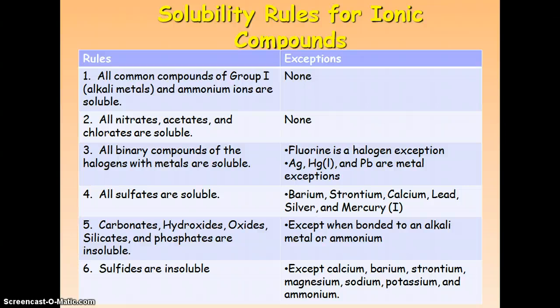Carbonates, hydroxides, oxides, silicates, and phosphates are insoluble, except when they're bonded to an alkali metal or ammonium ion, so that goes back to rule 1. So everybody except for what's included in rule 1 is insoluble if it's got a carbonate, hydroxide, oxide, silicate, or phosphate attached.